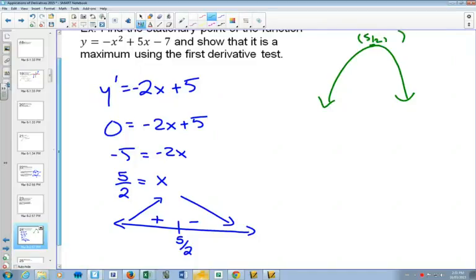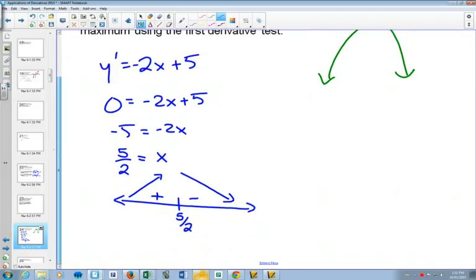This tells us right now that 5 over 2 comma something, and in this case it's an absolute maximum. But we know that it is a maximum. How do we find out the y-coordinate that goes with this?